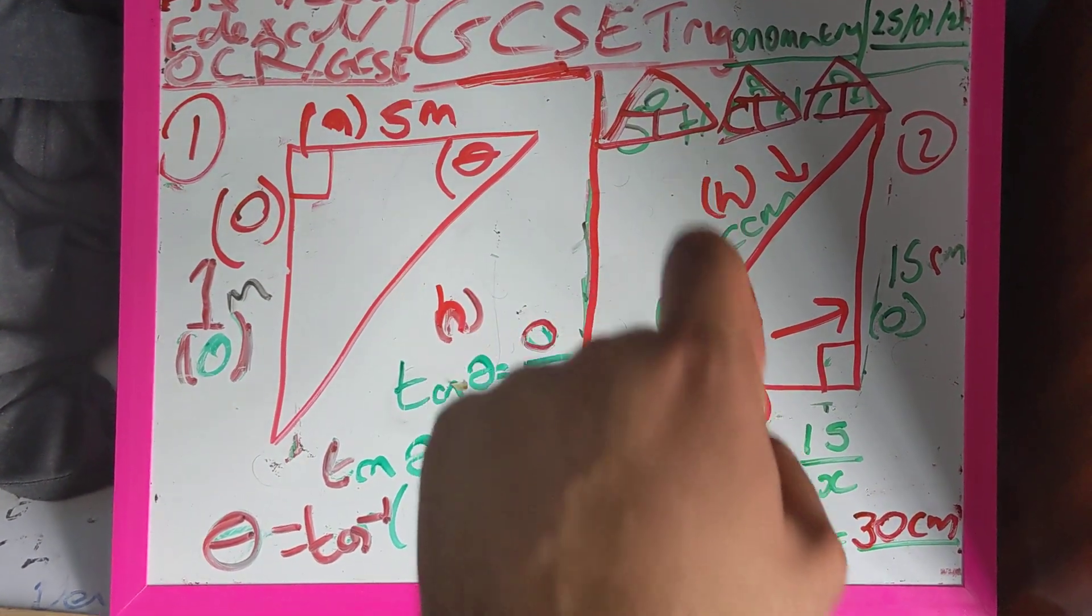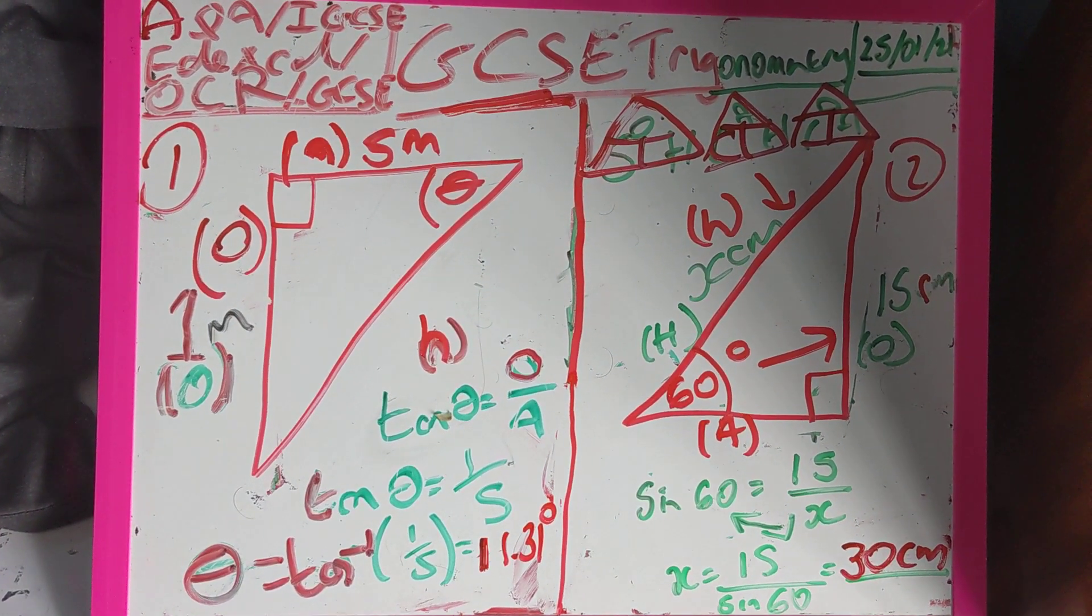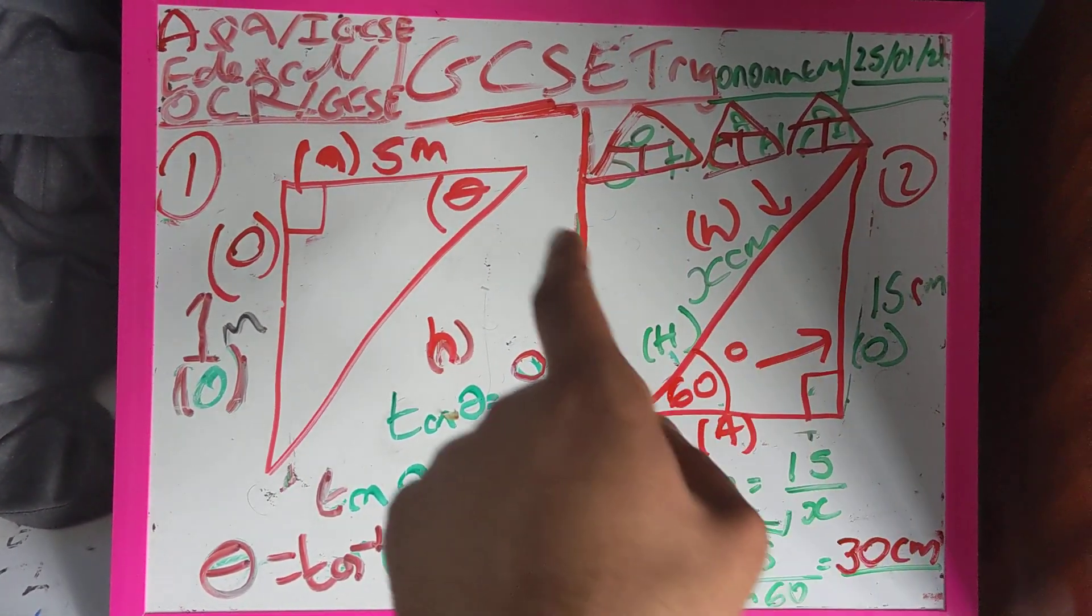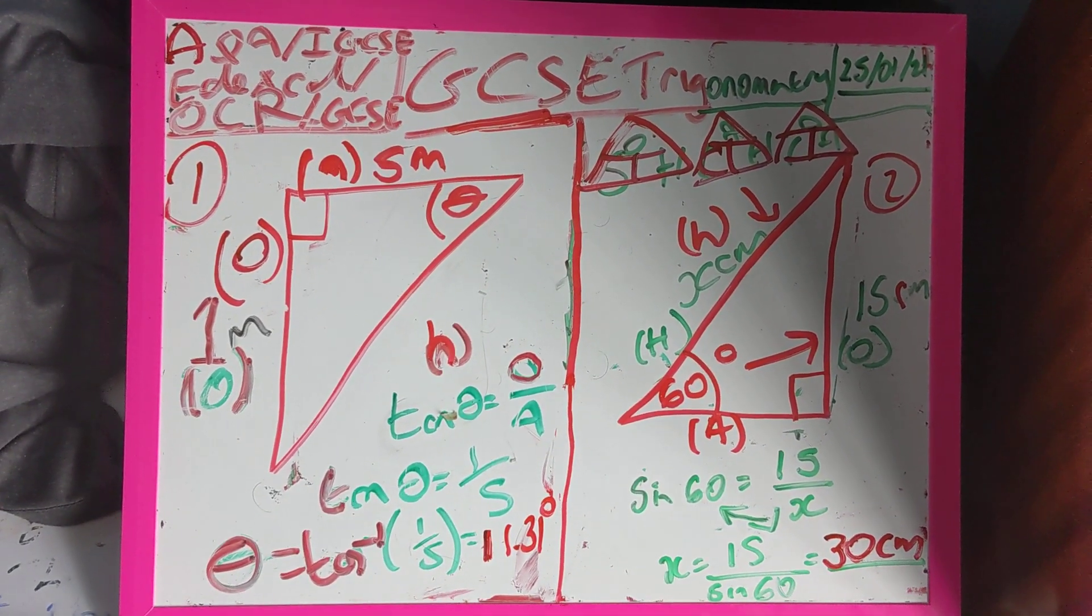So sine is opposite over hypotenuse, cosine is adjacent over hypotenuse, and then tan is opposite over adjacent. So make sure that you are happy with this and learn these formulas for any exams or tests that you might sit.